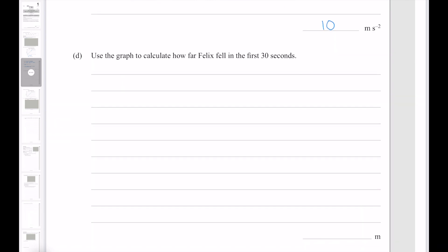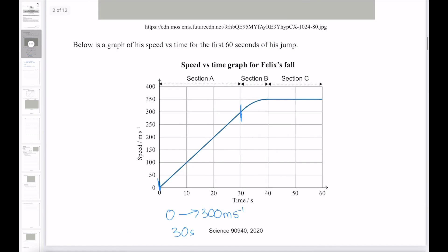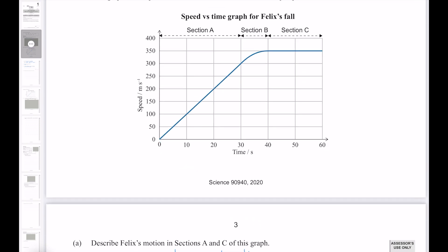Use the graph to calculate how far Felix fell in the first 30 seconds. Now, as you hopefully recall, on a speed time graph, distance is the area underneath the line. And as we can see, we have a triangle.